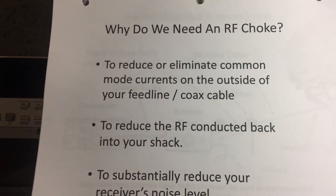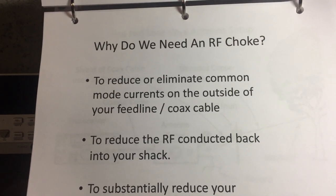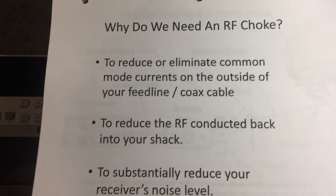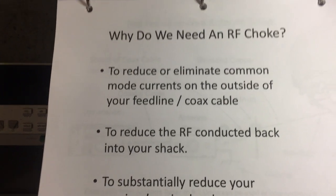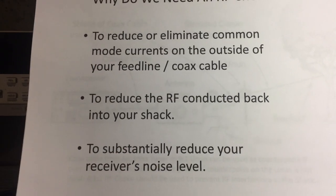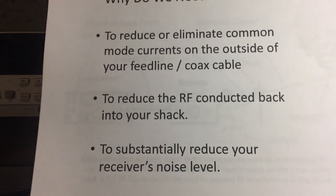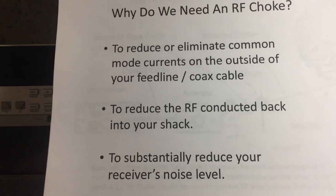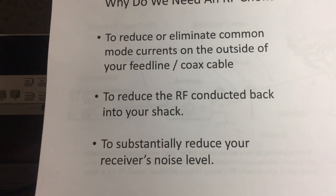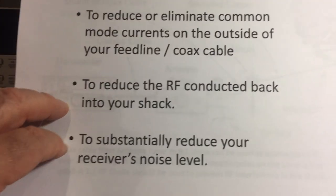We need to reduce or eliminate common mode currents on the outside of your feedline. For my setup, the coax shielding is my counterpoise, so it's the other element of my antenna. The RF choke also helps reduce RF back into the shack and substantially reduces the noise level in your receiver. Long wire antennas pick up excessive noise, so the RF choke helps filter that out.